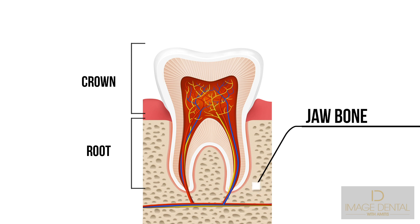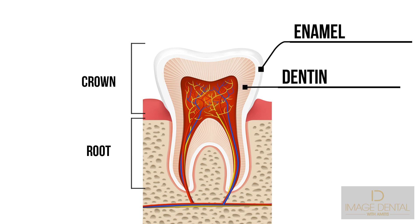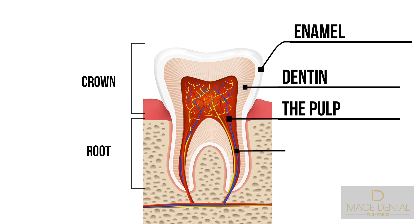The crown is mainly formed by two layers: the enamel, which is the hardest substance in the body, and the layer below the enamel called the dentin. The pulp is a soft mass of tissue present under the dentin layer that contains blood vessels and nerves to nourish the tooth. It extends from the crown down the length of the root through what is called the root canal.